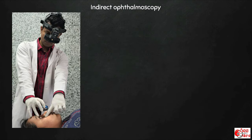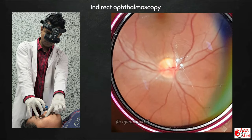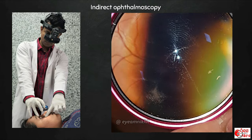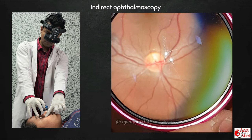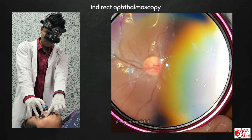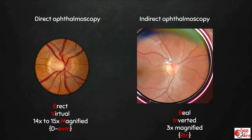Indirect ophthalmoscopy can be performed to get a larger view of around 45 degrees. It gives a 3D stereoscopic view and is also useful in hazy media. Comparing the images: on direct ophthalmoscopy the image is erect, virtual, and 14–15 times magnified; on indirect ophthalmoscopy the image is real, inverted, and around 3 times magnified.